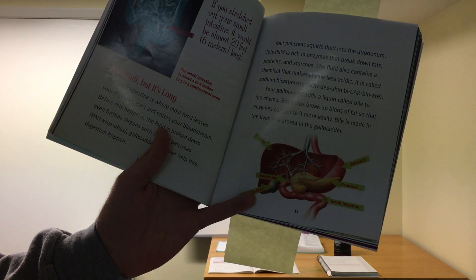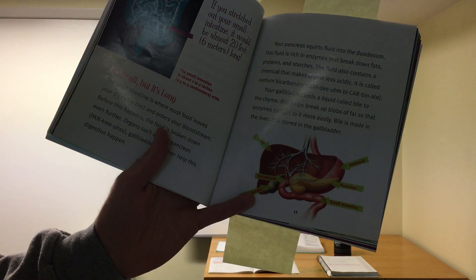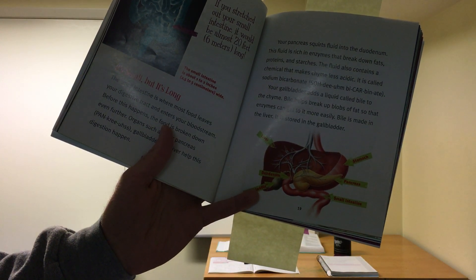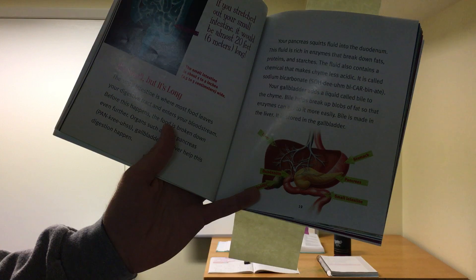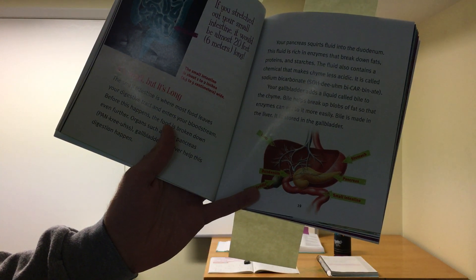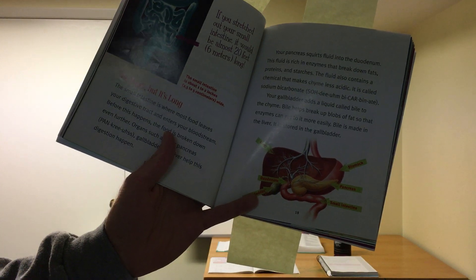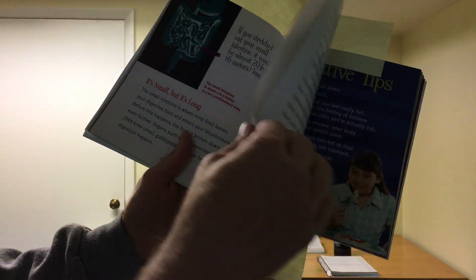Your gallbladder adds a liquid called bile to the chyme. Bile helps break up blobs of fat so that enzymes can get to it more easily. Bile is made in the liver. It's stored in the gallbladder. Bile is not very fun. If you get really sick and you throw up a lot, sometimes you throw up bile and it really tastes awful.